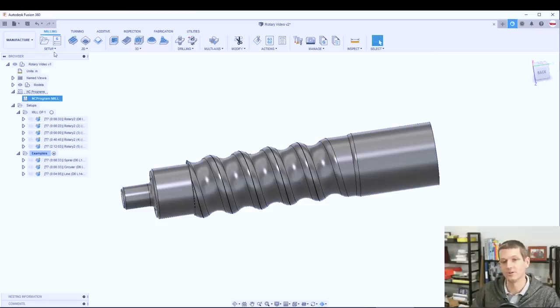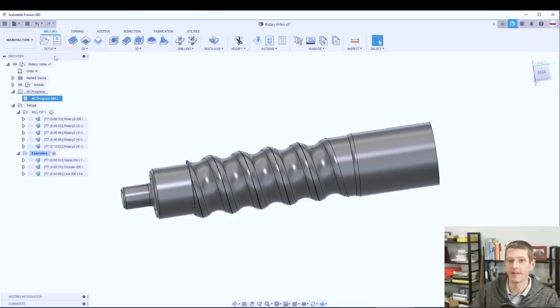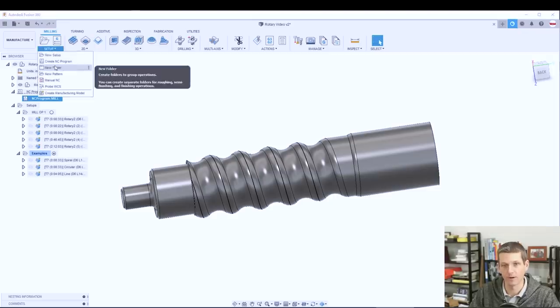We've moved to using NC programs for almost all of our machining applications, but I really recommend it in situations like fourth axis work, where the post property settings really matter. You can create a new NC program by going to setup, create NC program.